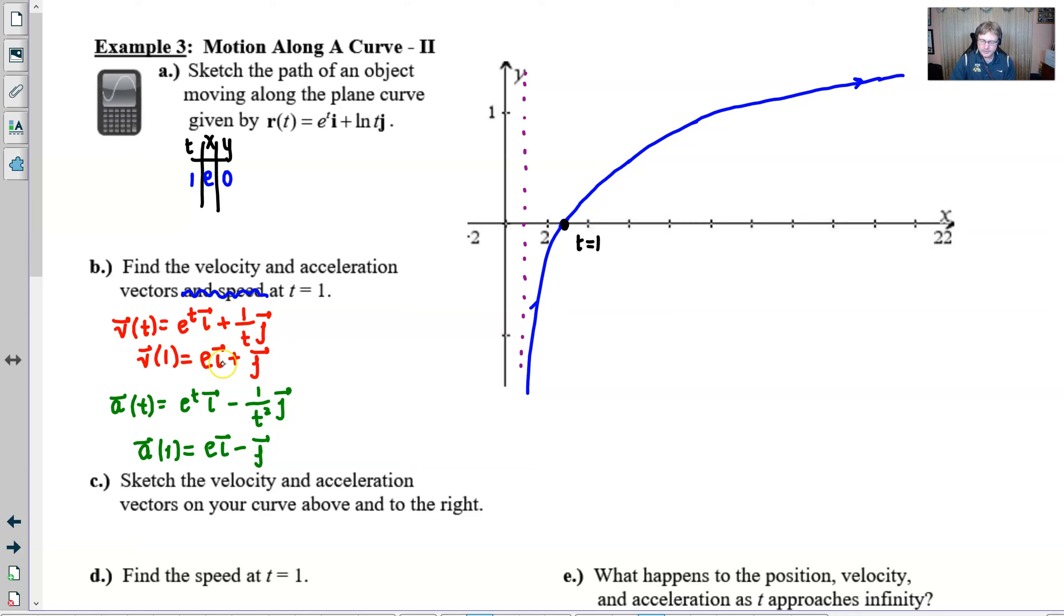For this vector we're about to draw for the acceleration, we need to go over e units in the x direction and at the same time one unit up in the y direction. Because the scale is so wonky, that's a very tricky thing to do because we're already at 2.7.